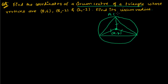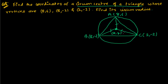We are given that the vertices of the triangle are: A = (8, 6), B = (8, -2), and C = (2, -2). We have to find the value of x and y — the circumcenter coordinates.